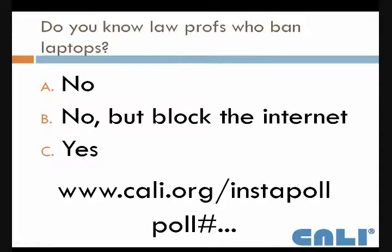You know, Austin, I just thought of a feature that we should add to Instapoll. You should be able to type www.cali.org/instapoll/the poll number and just go right to the page where you can click. That would reduce the number of clicks by one more. I like it. And I know that Sam, who coded Instapoll, is on this call, so I know he's listening.